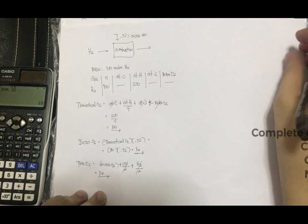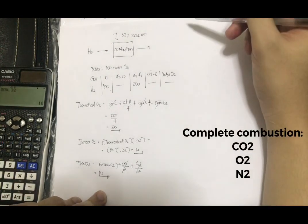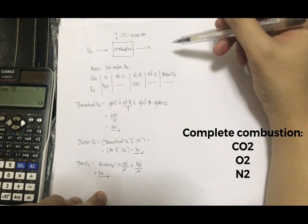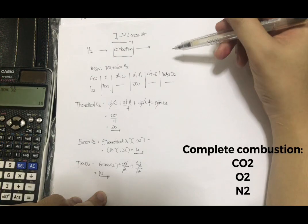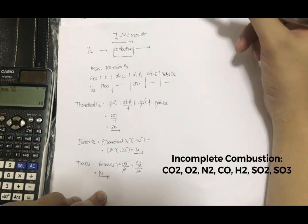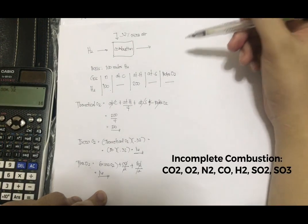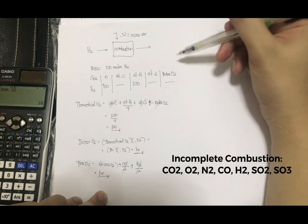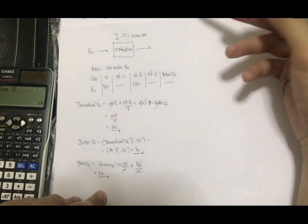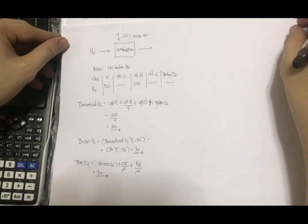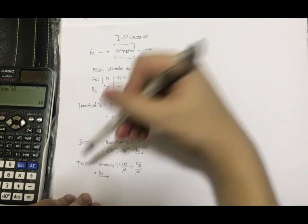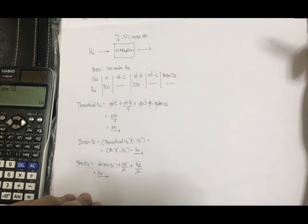Earlier, I didn't mention that for complete combustion, the products will only be CO2, O2, and N2. When it's incomplete combustion, that's where we include CO, H2, SO2, SO3. So in this case, for example, when it's complete combustion, whatever your excess O2 is, automatically, that will also be your free O2.